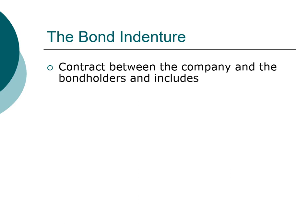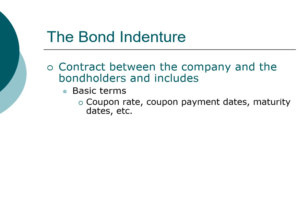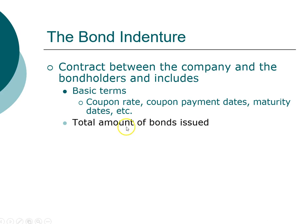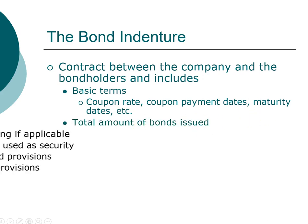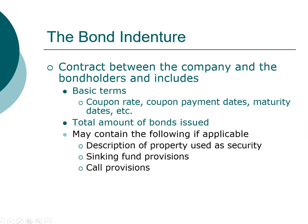The bond indenture is the contract between the company and the bondholders. This contract is important because it lays out all the important characteristics of the bond — the coupon rate, coupon payment date, face value, maturity, and so forth. It also tells you how much money the company has borrowed. The important question to ask is: is the characteristic advantageous to the bondholders or to the company? If advantageous to the bondholder, the company pays a lower coupon rate; if advantageous to the company, it must pay a higher coupon rate to attract investors.